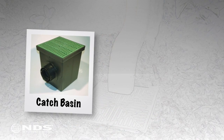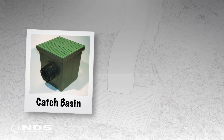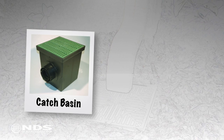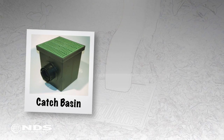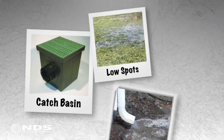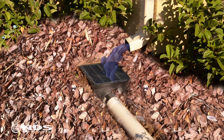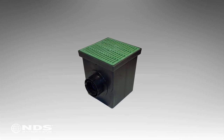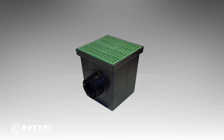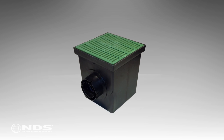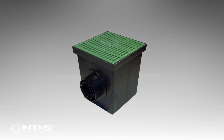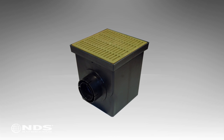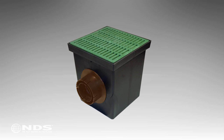Catch basins are an effective way to collect surface water that is draining to one specific area, like a low spot in the yard or below a rain gutter downspout. Surface water flows through the grate on the catch basin, then exits through a drain pipe connected to the basin. There are several sizes of catch basins. To determine which catch basin is needed, you need to check the flow capacity of both the grate and the outlet where the drain pipe connects to the basin.